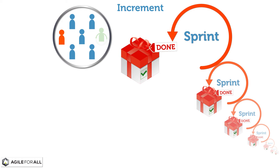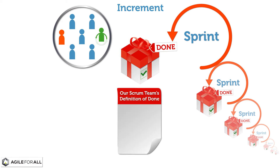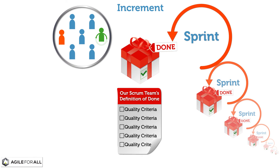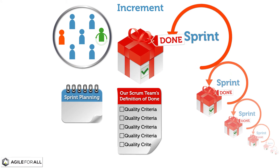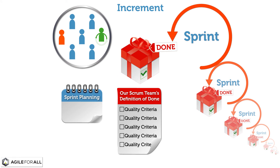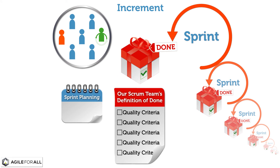In order to assess when work is complete on a product backlog item or an increment, the Scrum team creates a shared definition of done. This definition provides transparency about the level of quality that is considered sufficient to release an increment. The definition of done guides the development team in knowing how many product backlog items to select during sprint planning, since the purpose of each sprint is to deliver increments of potentially releasable functionality that adhere to the Scrum team's current definition of done.